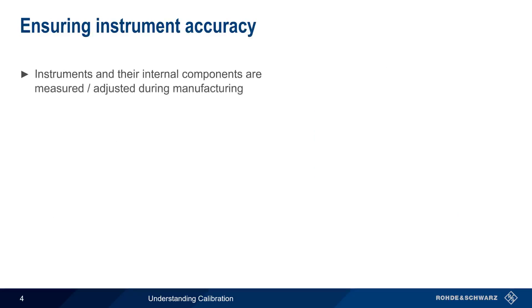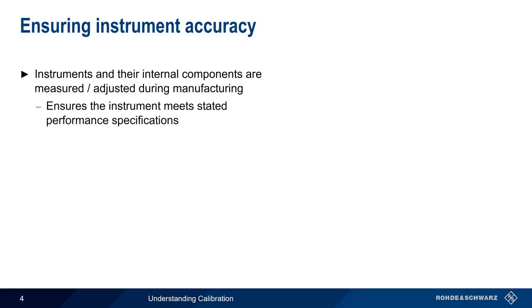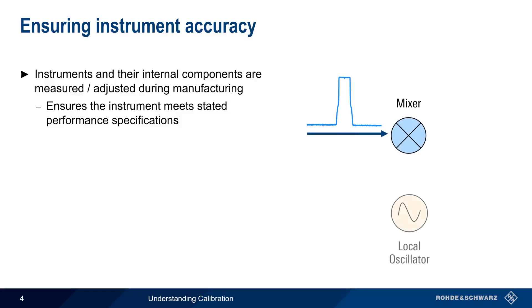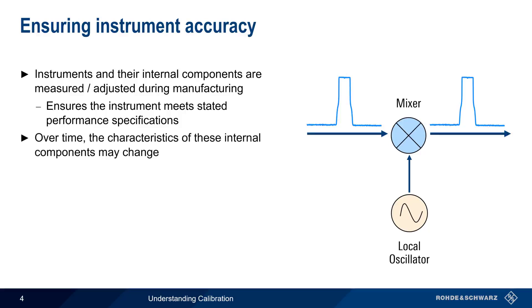The internal components of an instrument are measured and adjusted as part of the manufacturing process, ensuring that the newly manufactured instrument meets its stated performance specifications. For example, in the case of a spectrum analyzer, the local oscillators should have a high level of frequency stability in order to prevent distortion of the measured signal during downconversion. However, over time, the characteristics of these internal components may change.